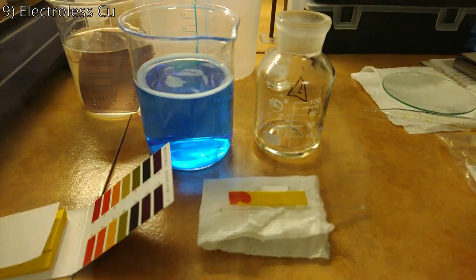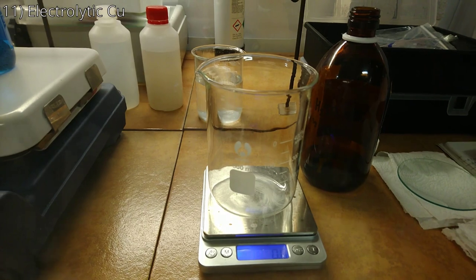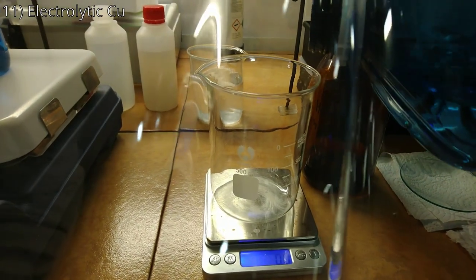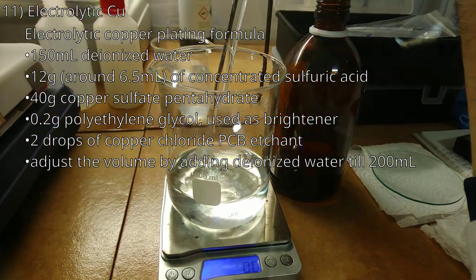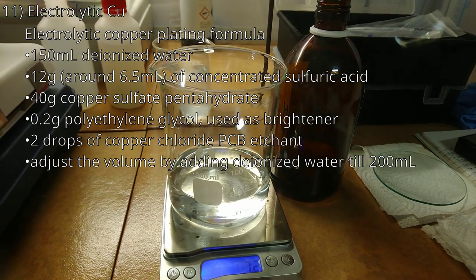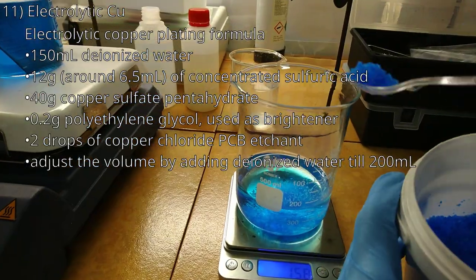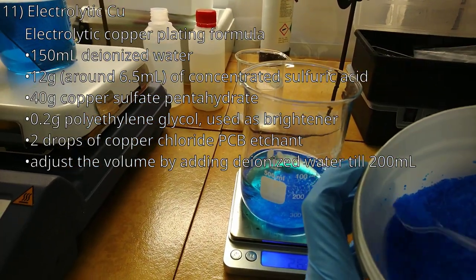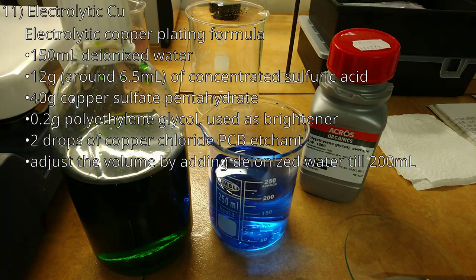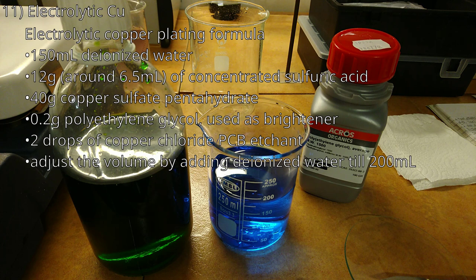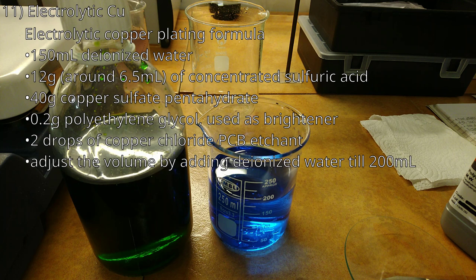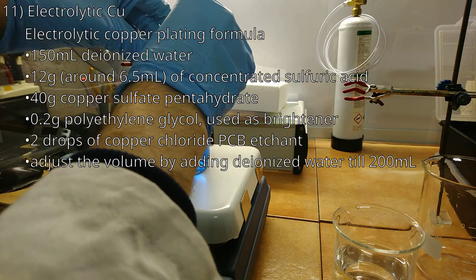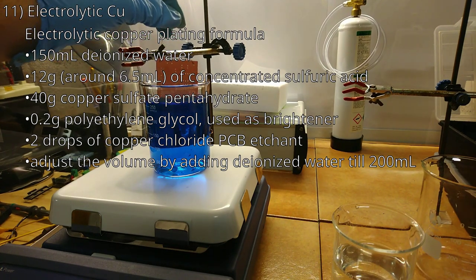Step 11 is the electrolytic copper plating step. This bath can be prepared as follows. Start by pouring 150 ml of deionized water to a beaker. To it, add 12 g of concentrated sulfuric acid. Then add 40 g of copper sulfate pentahydrate. Stir until it is fully dissolved. Then add 0.2 g of polyethylene glycol used as brightener. This can be bought either in solid or liquid form. Both will work. Then add 2 drops of copper chloride PCB etchant. A trace amount of chloride ions improve the plating quality. Finally, adjust the volume with deionized water till 200 ml. This solution is stable in storage and can be reused multiple times.